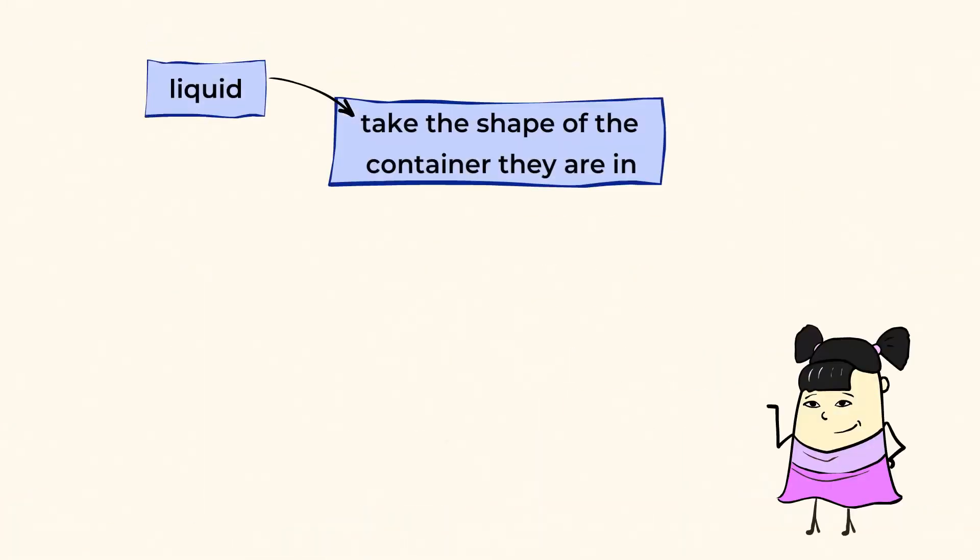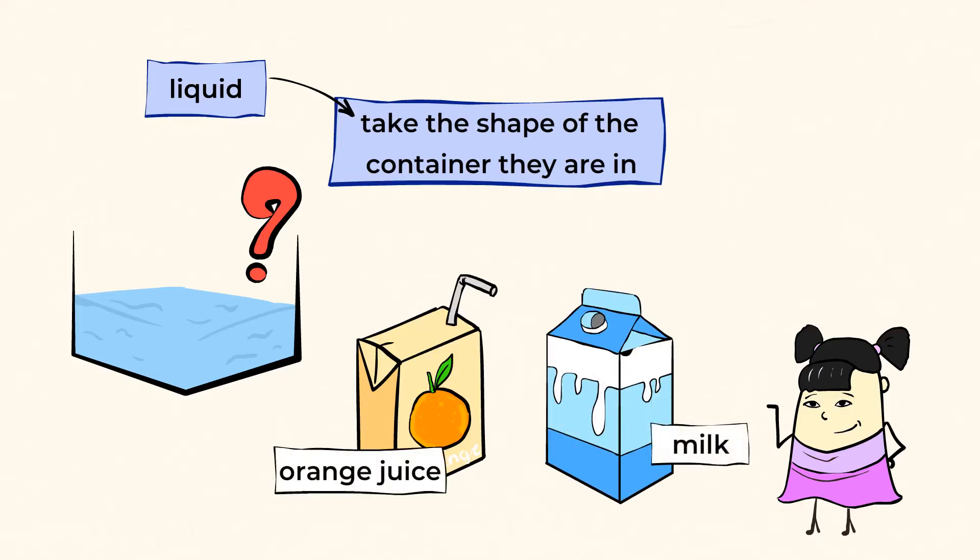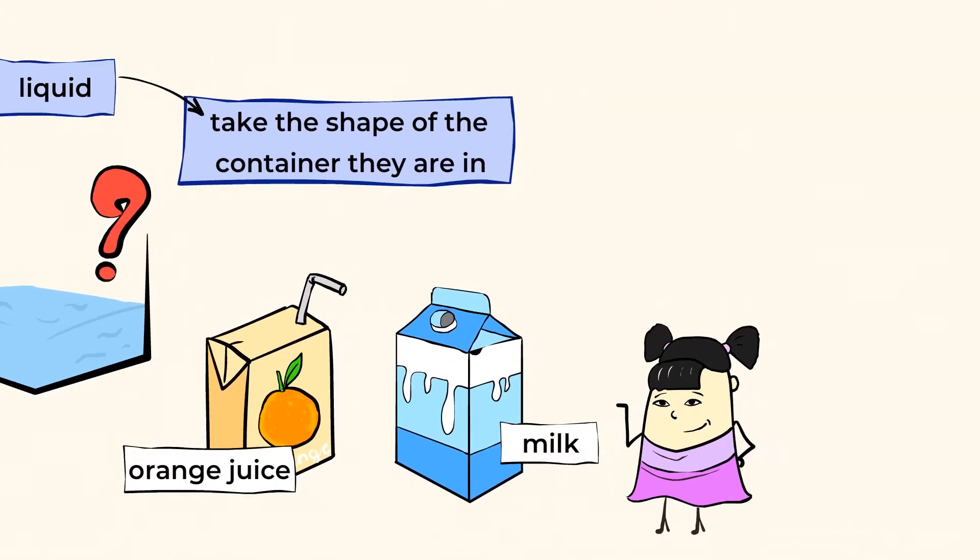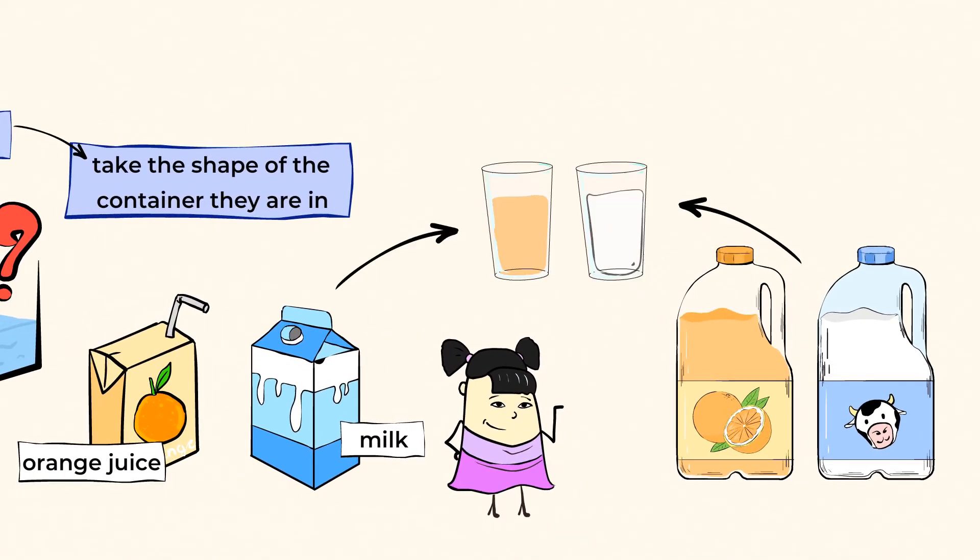Indeed, liquids take the shape of the container that they're in. Can you think of any other liquids? How about orange juice or milk? They typically come in carton boxes, or even gallon-sized containers. But once you put them in a glass, they take the shape of the glass.